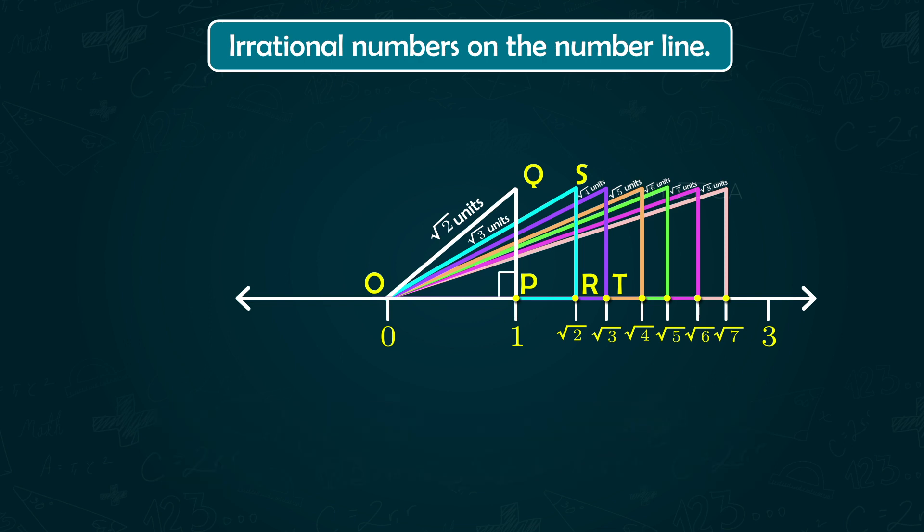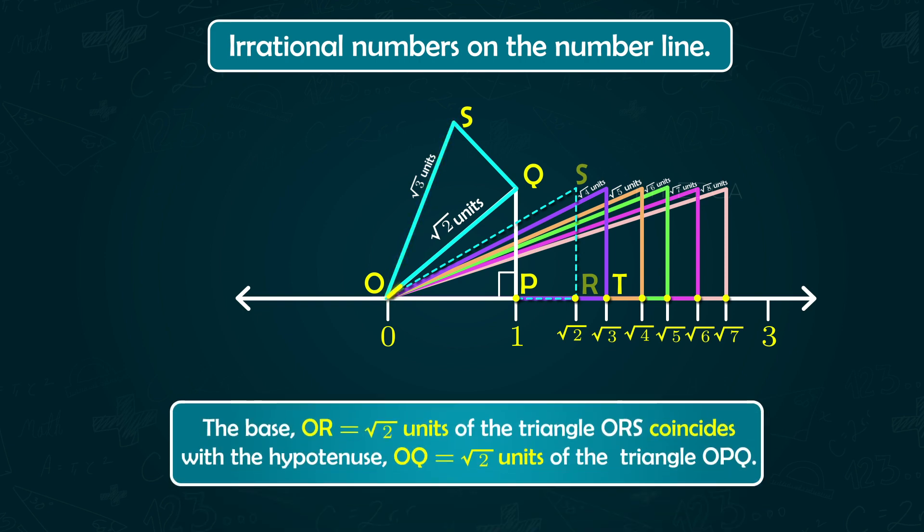Now have a close look at the diagram. Keeping the first right-angled triangle OPQ as it is, let's rotate the second triangle ORS with hypotenuse √3 in such a way that the base √2 units of the second triangle ORS coincides with the hypotenuse √2 of the first triangle OPQ.